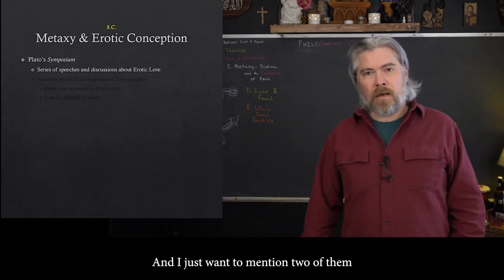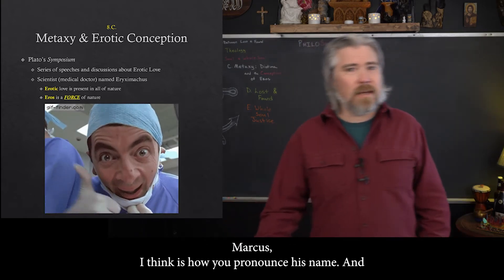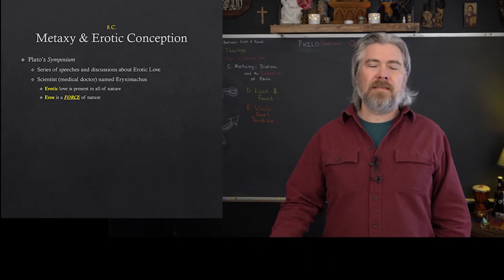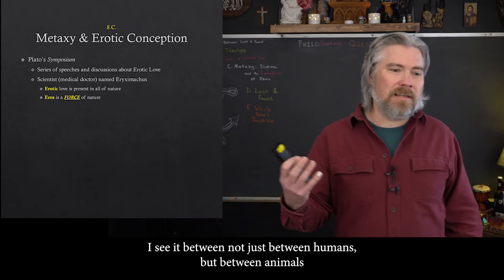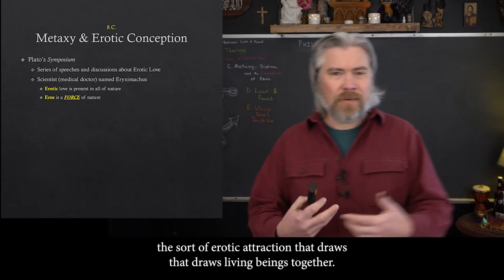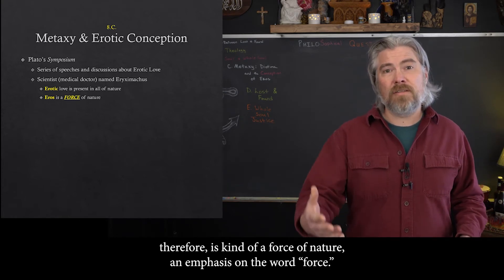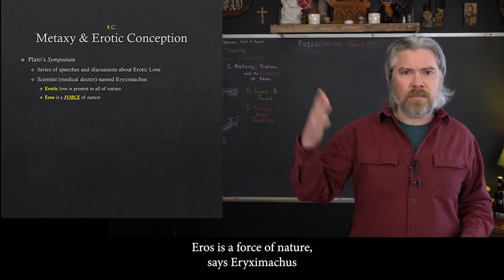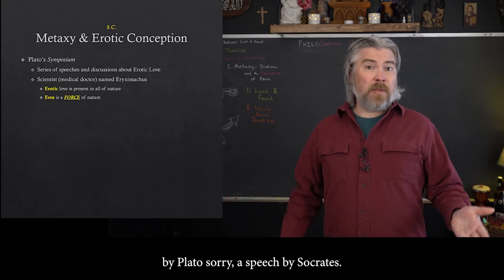It includes five speeches by five different characters in Plato's discourse, giving their perspectives — their odes to erotic love, their reflections on it. I just want to mention two of them. One is by a doctor, a scientist called Eriximachus. He says: as a doctor, I noticed that what we call erotic love is actually present all over nature. I see it everywhere — not just between humans, but between animals and even plants, among all living beings. This sort of erotic attraction draws living beings together. He says eros is therefore a force of nature — emphasis on both 'force' and 'natural.'